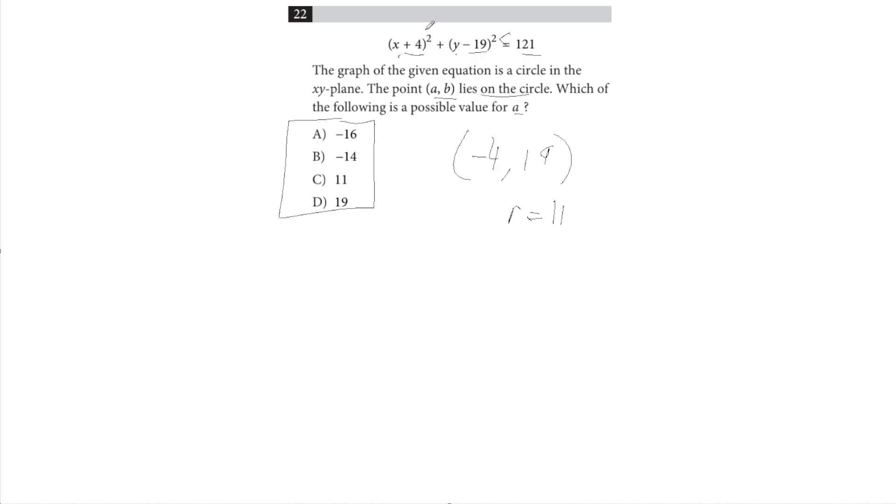Because when we're adding numbers that we're squaring, those numbers are always going to be positive. So if either of these come out to be something that's bigger than 121, then we have a problem because there's no way for us to get a smaller number by adding another positive.